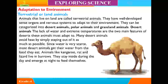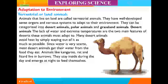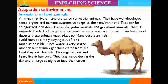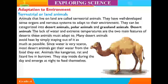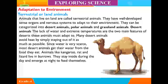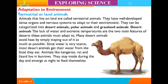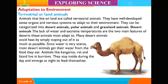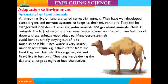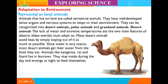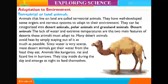Desert animals. The lack of water and extreme temperatures are the two main features of deserts these animals must adapt to. Many desert animals avoid heat by simply staying out of it as much as possible. Since water is very scarce, most desert animals get their water from the food they eat. Animals like kangaroo rats and lizards live in burrows. They stay inside during the day and emerge at night to feed themselves.